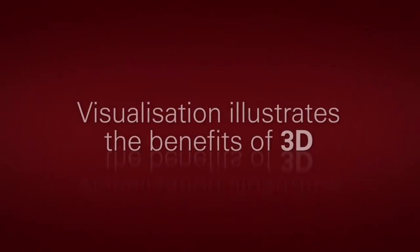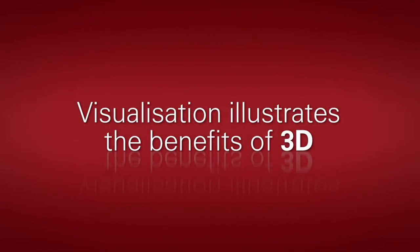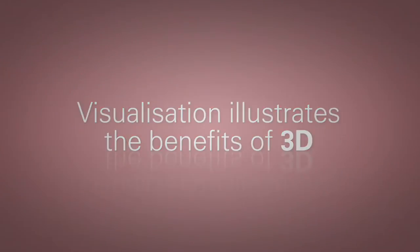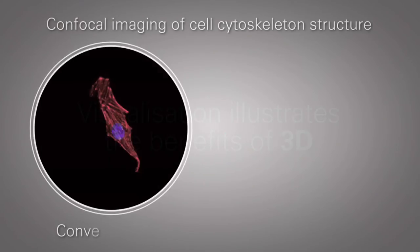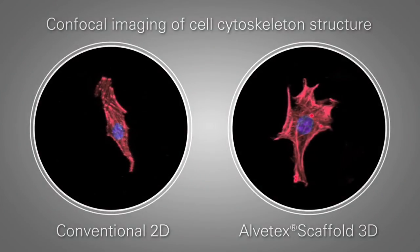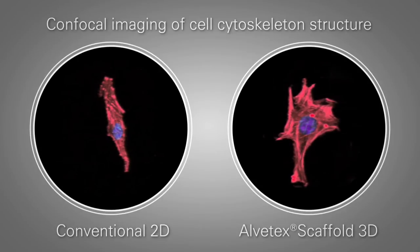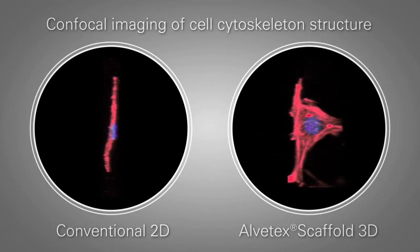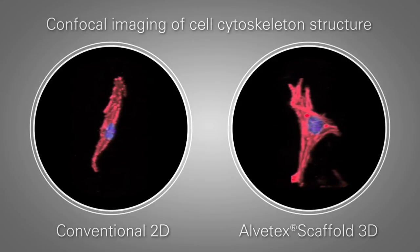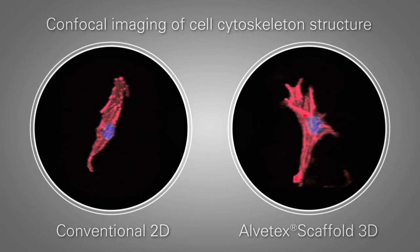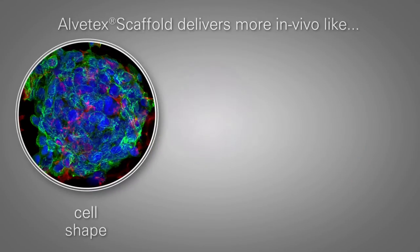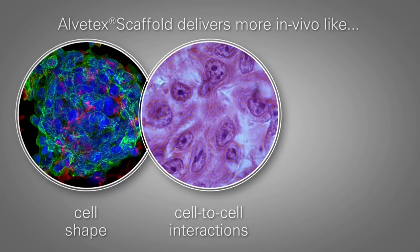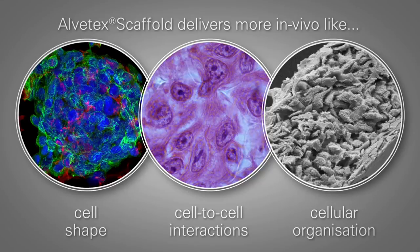This visualization illustrates the benefits of 3D: confocal imaging of cell cytoskeleton structure — on the left, conventional 2D, and on the right, Alvatec Scaffold 3D. Alvatec Scaffold delivers more in vivo-like cell shape, cell-to-cell interactions, and cellular organization.